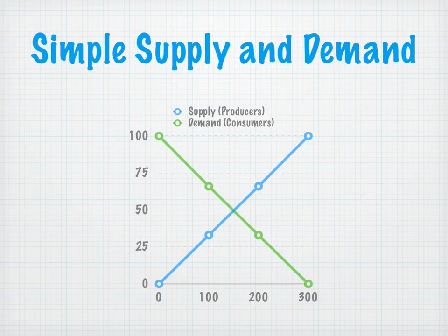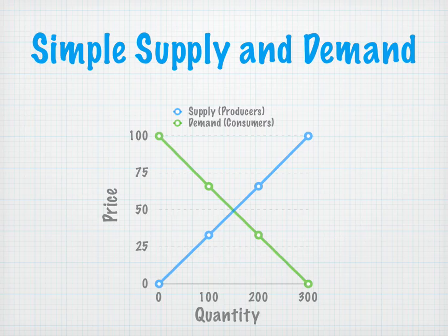Supply has to do with producers — how much of a good, maybe it's land, maybe it's labor, maybe it's capital, that producers are willing to produce at a certain price. And demand is green, and that is how much demand there is for a certain good at a certain price. We have price on our vertical axis and quantity on our horizontal axis.